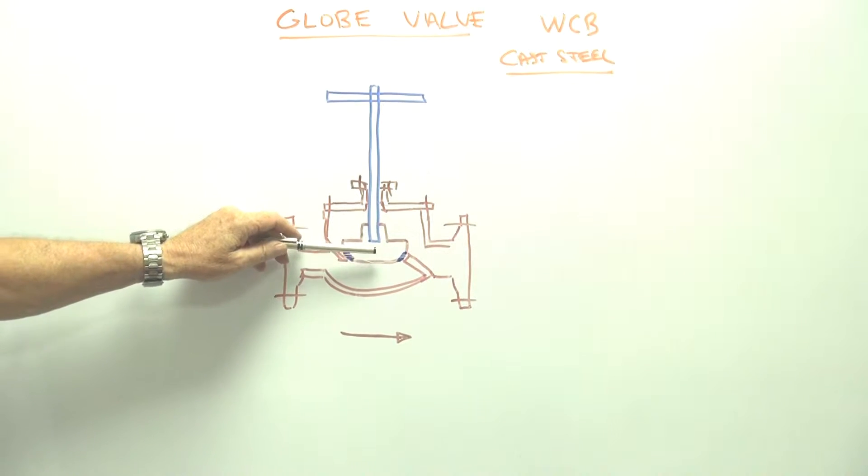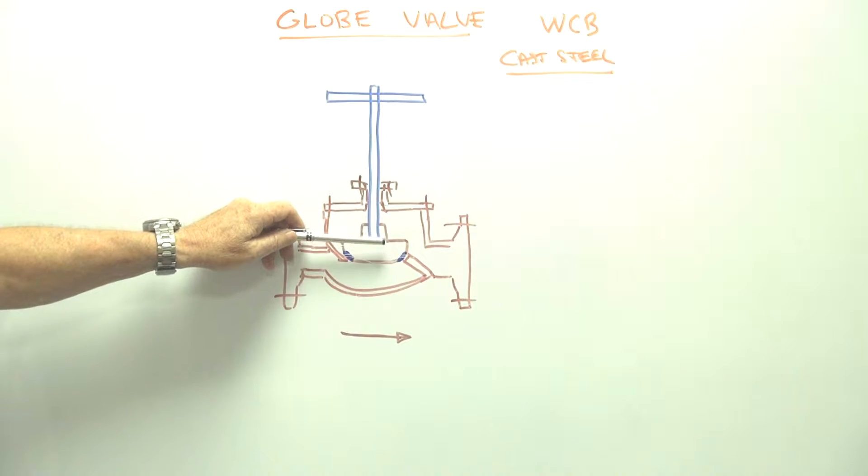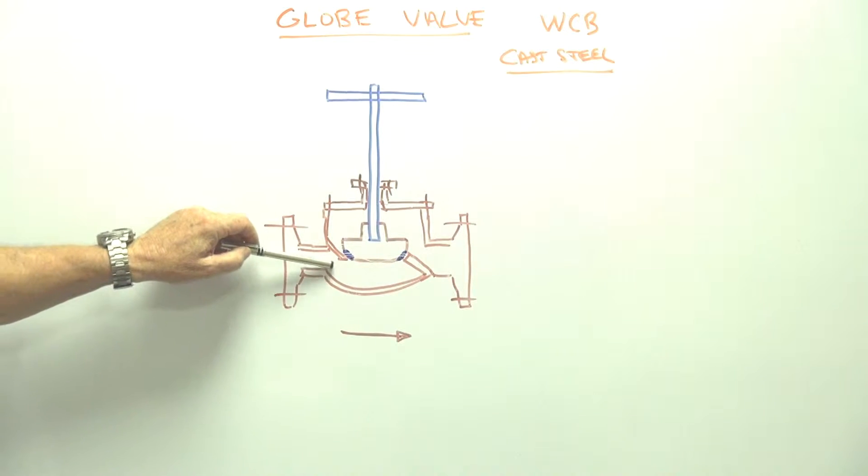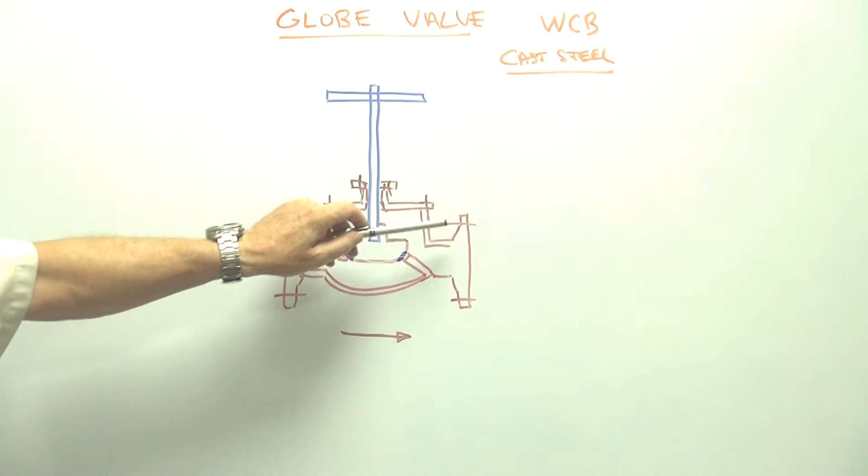Now the idea of this seat, you wind this handle up and down and it lifts this assembly up and down here. The flow comes into the base underneath and out and it's usually a flange valve.